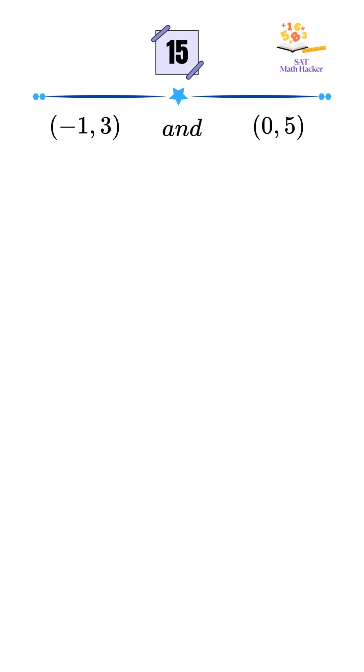Let's start with the first point, negative 1 comma 3. In option A, when we plug in x equals negative 1, we get y equals 3. So far, so good. But wait, don't jump to conclusions.